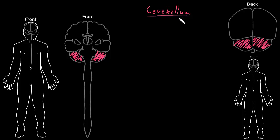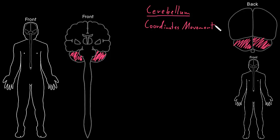Now the cerebellum does a number of different functions, but probably the most obvious thing that it does is it coordinates movement. It's pretty neat how it works with the other motor structures in the nervous system to coordinate movements, because the cerebellum really smooths out movements and makes them more accurate.